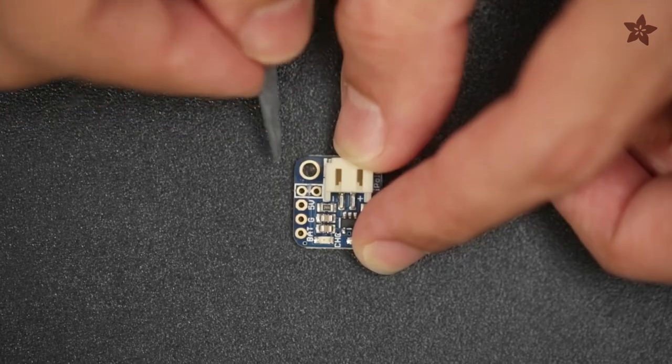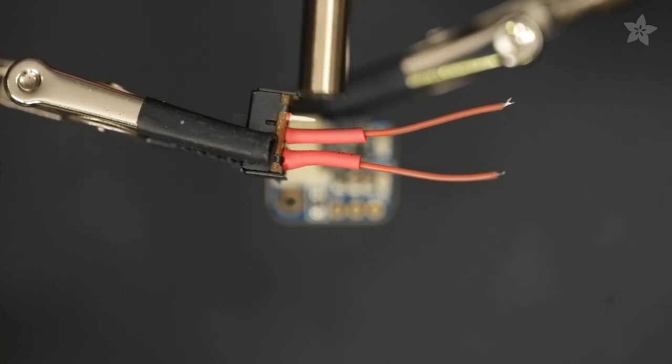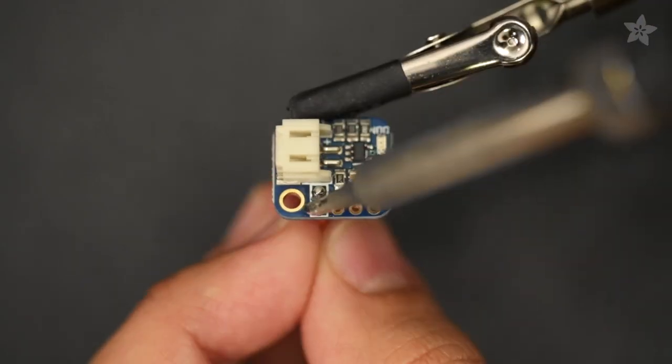We'll need to add a slide switch to easily power it on and off by prepping the LiPo backpack for wiring. We like using 30 gauge silicone coated stranded wires for those flexible connections.